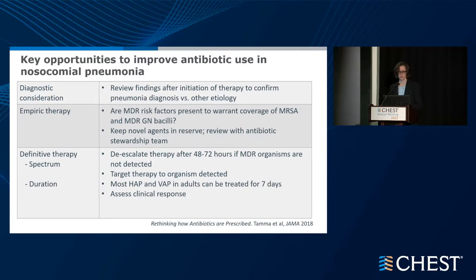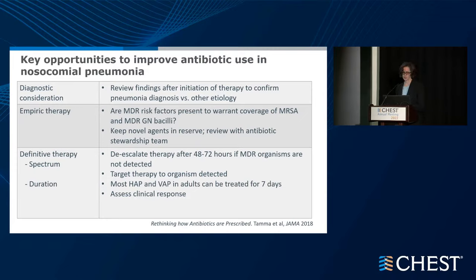Key opportunities to improve antibiotic use in nosocomial pneumonia include: diagnostic consideration — reviewing findings after starting therapy to confirm pneumonia versus another etiology; considering empiric therapy — are there MDR risk factors warranting coverage of MRSA and MDR gram-negatives; keeping novel agents in reserve and reviewing appropriate indications with the antibiotic stewardship team; and definitive therapy — de-escalating after 48 to 72 hours if no MDR organisms are identified, targeting therapy to the detected organism, and treating generally for seven days while assessing clinical response.